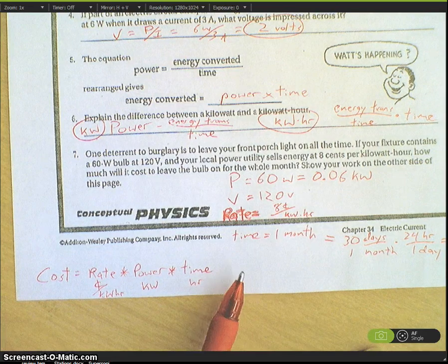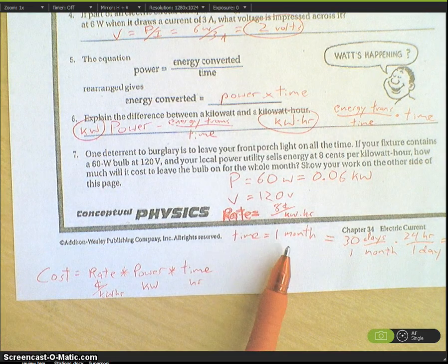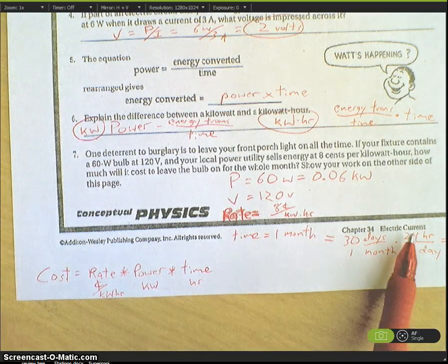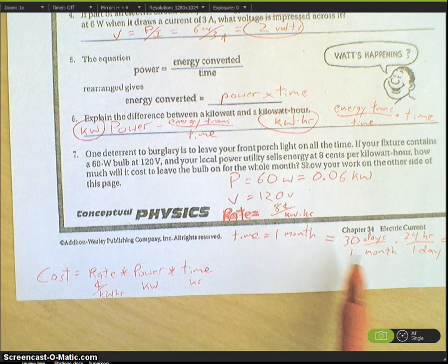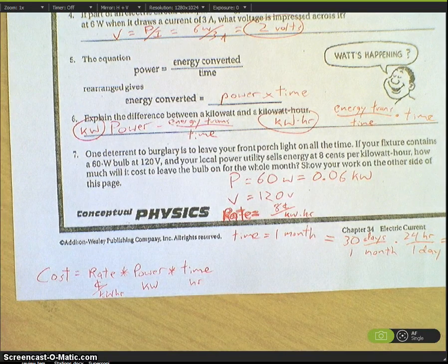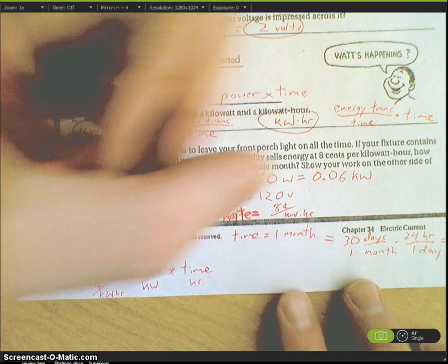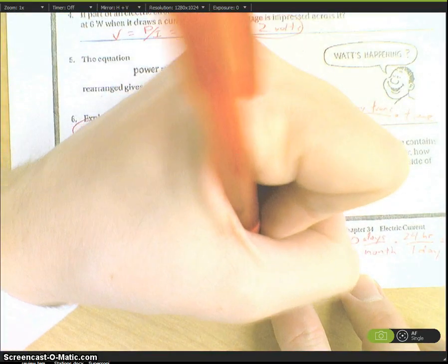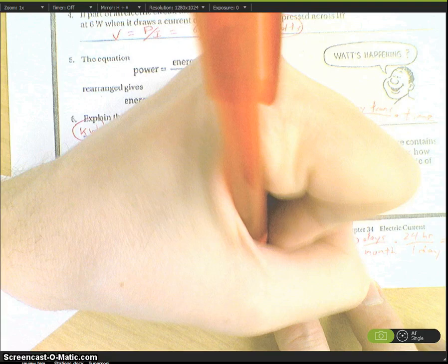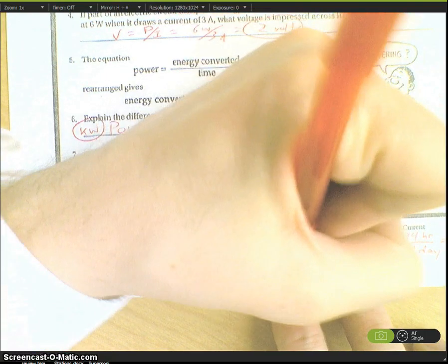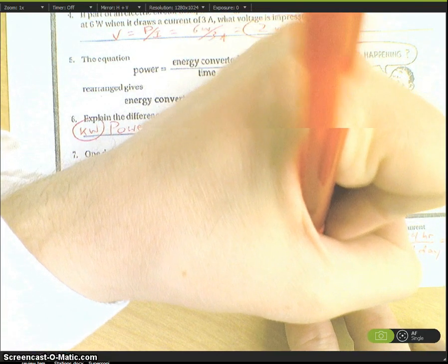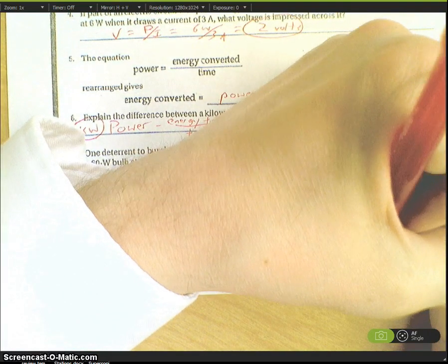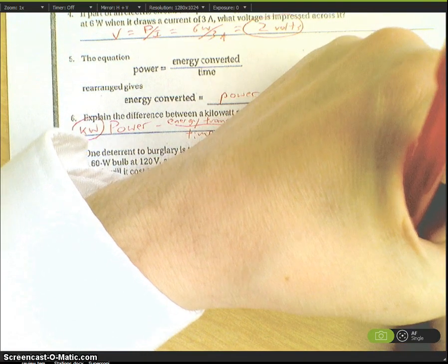We need to convert one month into hours. So 30 days is one month, 24 hours is one day. One times 30 times 24 gives us 720 hours. If we actually put this into the equation, we have 8 cents per kilowatt hour multiplied by 0.06 kilowatts multiplied by 720 hours.